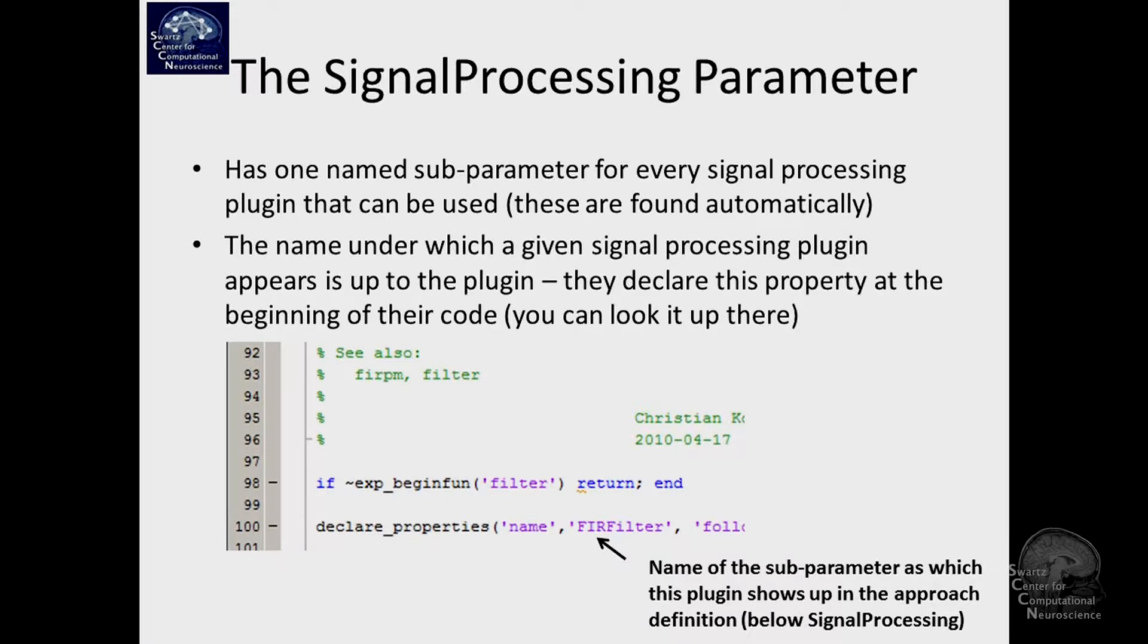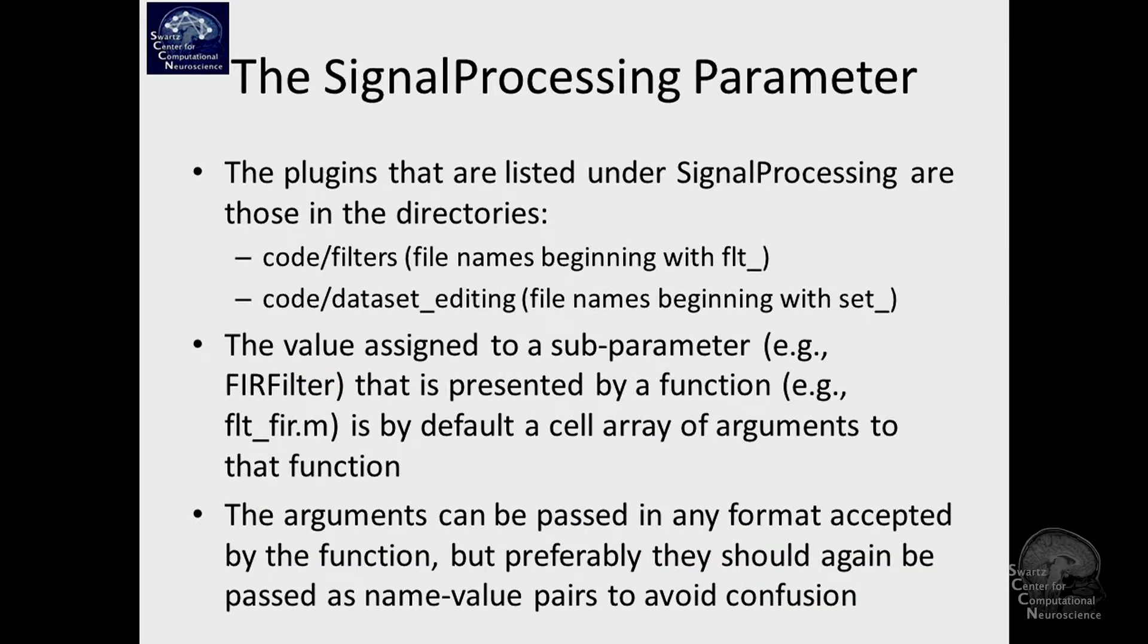It's the function that declares this name, although the function itself might be called FLT_FIR.m or something like that. Fundamentally all the filters are in one directory, so furthermore this directory where they are is code/filters and they all begin with FLT underscore. Generally when you are searching for a function, this is where to search.